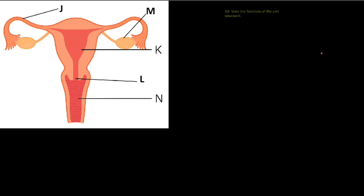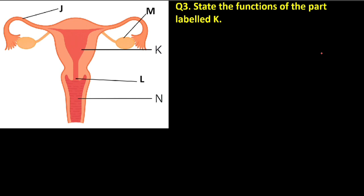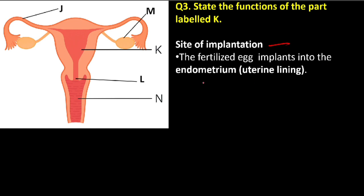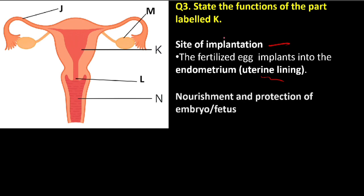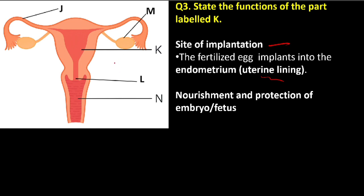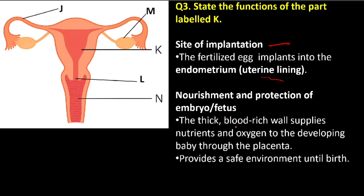Question number three: state the functions of the part labeled K, the uterus. The first function is that it is the site for implantation — this is where the fertilized egg implants into the endometrium, which is the uterine lining. Another function is nourishment and protection of the embryo or fetus. It has a thick blood-rich wall that supplies nutrients and oxygen to the developing baby through the placenta, and provides a safe environment until birth.